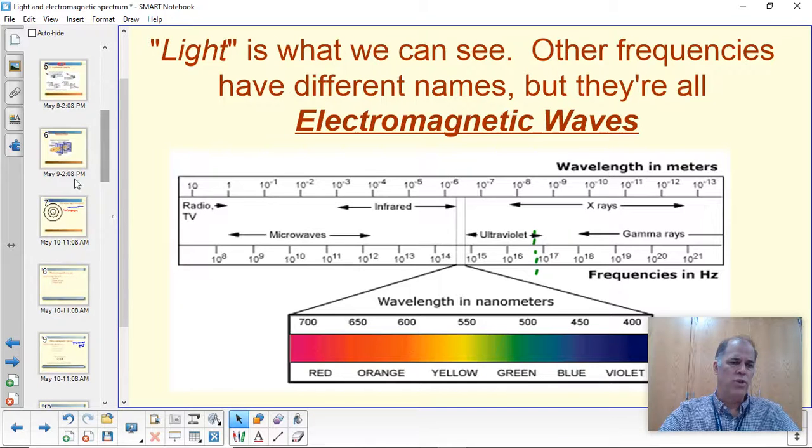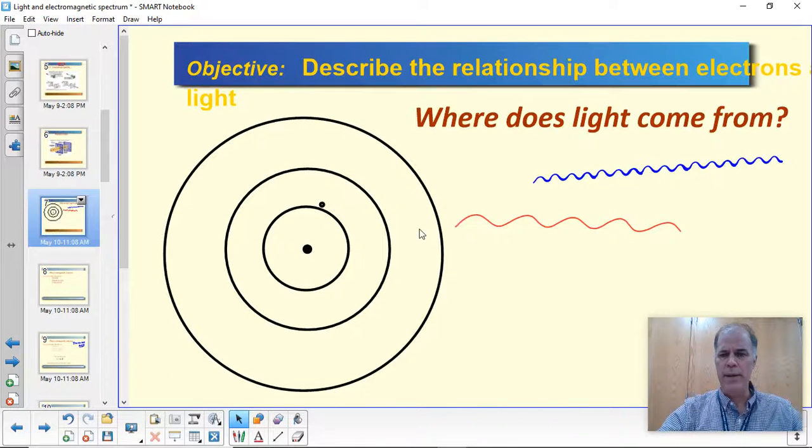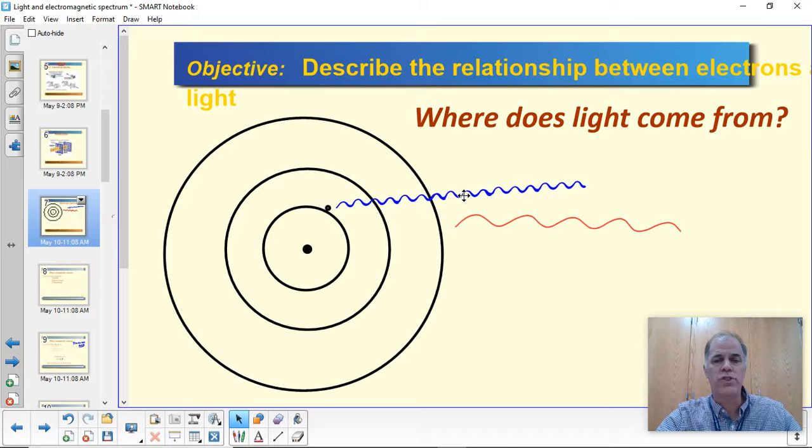And that probably deserves a little bit of explanation. So I'm going to go back to this diagram here. We said before that light comes from electrons falling from high energy to low energy. But most things in physics can happen in reverse.